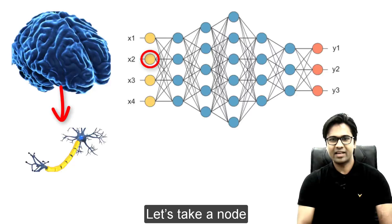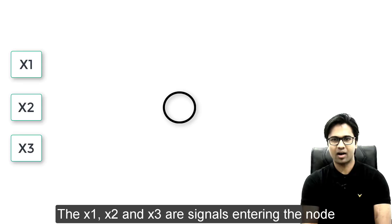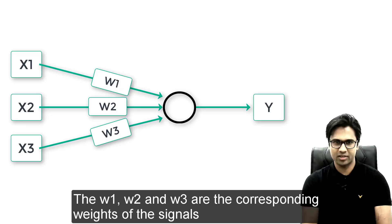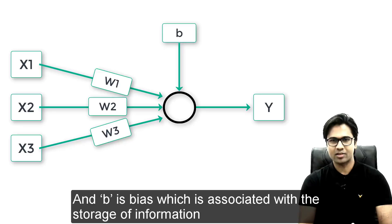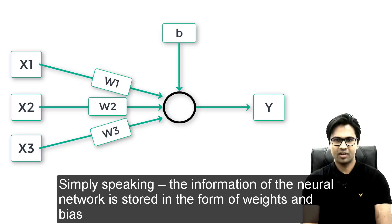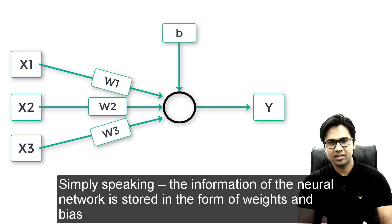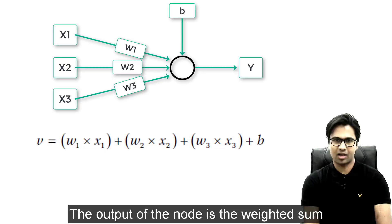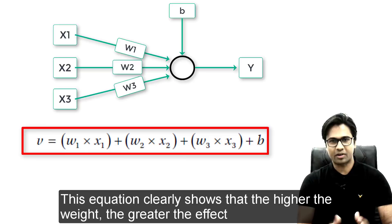Human brain uses association of neurons, whereas neural network uses connection weights. So what are connection weights? Let's take a node. x1, x2, x3 are signals entering the node. y is the output, and w1, w2, w3 are the corresponding weights of the signals. b is the bias, which is associated with storage of information. The information of a neural network is stored in the form of weights and bias. The input signals are multiplied by the weights before entering the node, and the output of the node is the weighted sum.